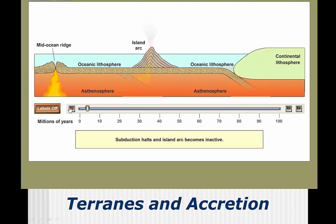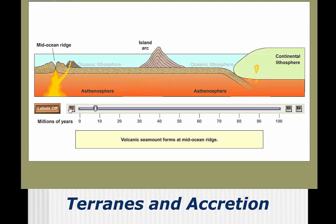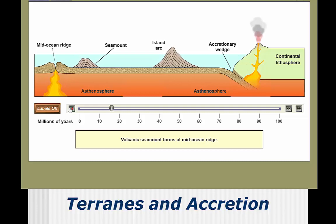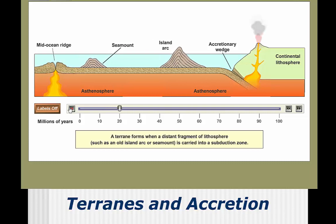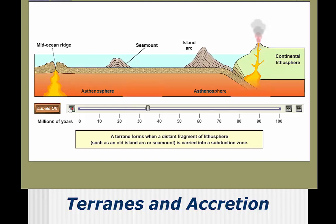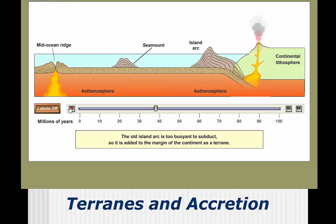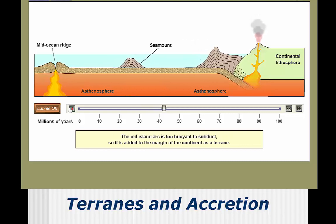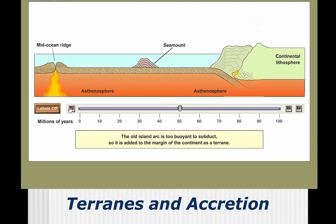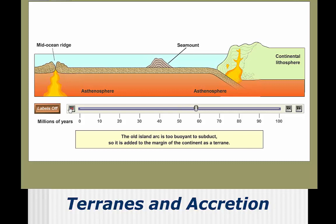In some cases, plates aren't carrying entire continents, but just small segments of land. These segments can be volcanic island arcs or even sections ripped off of other continents. In either case, the segments are known as terranes, and they're recognizable as having a different geologic history than the continent upon which they are accreted. This is largely how the northwestern portion of North America was formed.